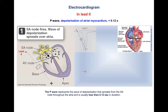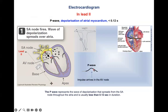Now we start the depolarization of the atria, which is signified by the P wave. The depolarization wave goes from the minus to the plus electrode, so it should give a positive deflection. Indeed, the P wave is positive. The P wave takes less than 0.12 seconds.